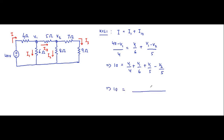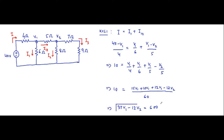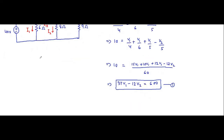The common multiple is 60. So we get: 10 equals (15V1 + 10V1 + 12V1 - 12V2) / 60, which simplifies to 37V1 minus 12V2 equals 600. This is the first equation.